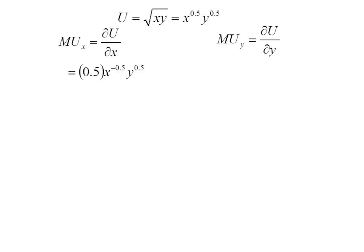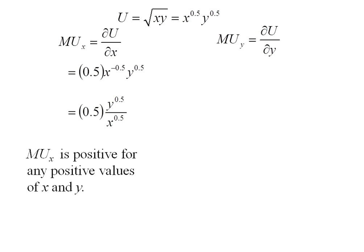It's going to be 0.5 x to the negative 0.5 y to the 0.5. If you don't like that negative exponent on x you can go ahead and put it down in the denominator. What we see here is marginal utility of x is going to be positive for any positive values of x and y.